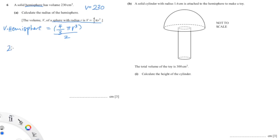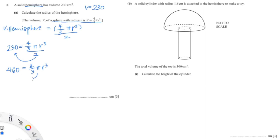Now we're going to substitute 230 into the formula, so that's 230 equals 4 over 3 pi r cubed over 2. Since we're finding r, we shift the 2 to the other side, which gives us 460 equals 4 over 3 pi r cubed. Now we bring 4 over 3 pi to the other side, so that's 460 over (4 over 3 pi) equals r cubed.